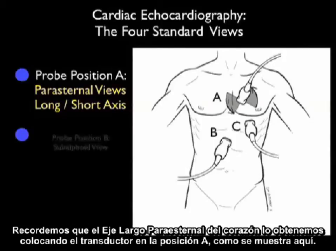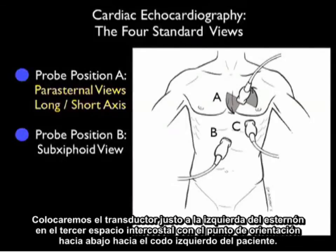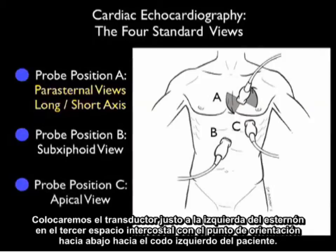Recall that the parasternal long axis view of the heart is obtained by placing the probe into position A as shown here. That will configure the probe just left of the sternum at about intercostal space 3, with a marker dot down towards the patient's left elbow.